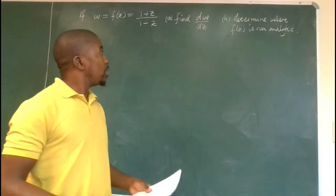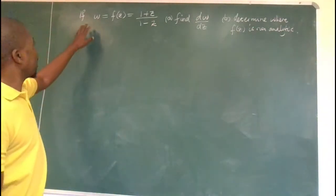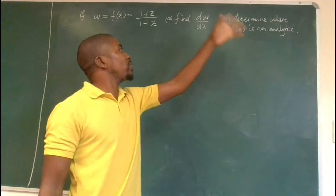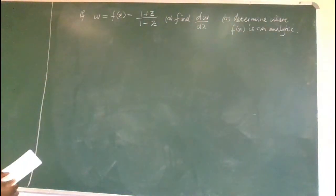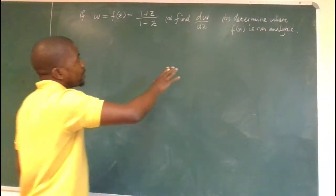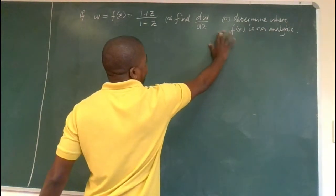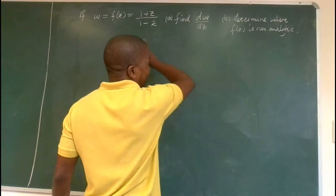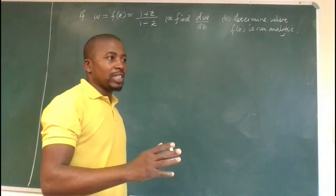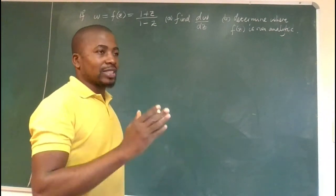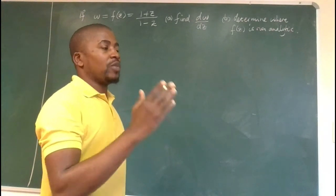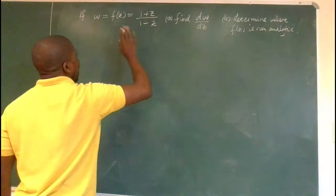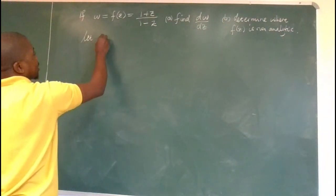Hello once again, welcome guys. Let's have a look at this question. If w is a complex-valued function, find its derivative and determine where that function is non-analytic. For a function to be analytic, its derivative must exist at that given point — if the function is analytic at z-naught, then its derivative exists there.